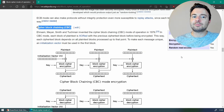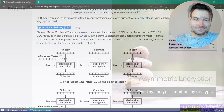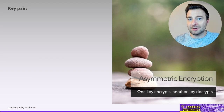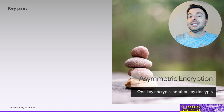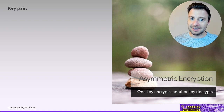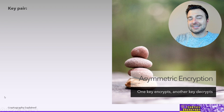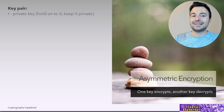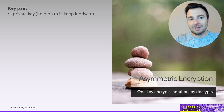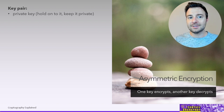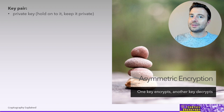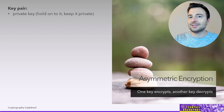Since we just talked about symmetric encryption, you can probably guess we also have asymmetric encryption. Why asymmetric? Because we're not using the same key to encrypt and decrypt anymore — we're using two keys. Those two keys are generated together and are called a key pair. That key pair consists of a private key, which you're supposed to hold onto for dear life and never share with anyone — not your boss, not anyone. Nobody should ever get their hands on your private key.